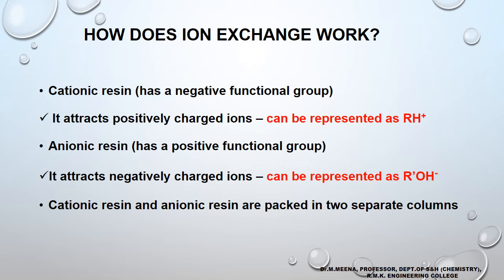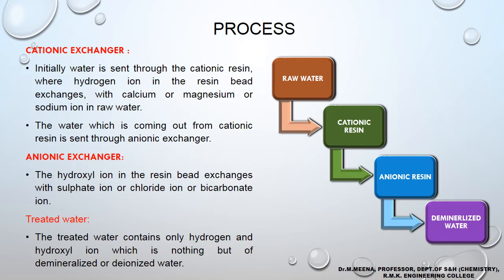The cationic resin attracts all positively charged ions, and the anionic resin attracts all negatively charged ions. These two resins are packed in two separate columns. Raw water containing hardness and non-hardness causing salts is first sent into the cationic resin column where all cations are exchanged. The water coming out of the cationic column is then sent into the anionic resin column where all anions are exchanged, and finally we obtain demineralized water.